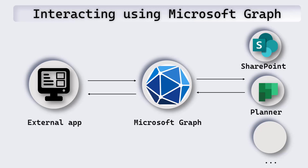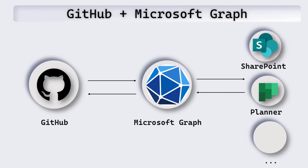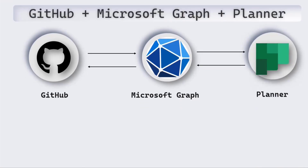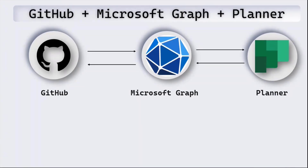There are several types of apps we can develop. One such app is GitHub. If GitHub has to access Microsoft 365 data, then we can use Microsoft Graph to get the data. That's what we'll be looking at today. In particular, we'll be looking at interacting with Planner from GitHub — using Microsoft Graph to interact with Planner and then passing that data back to GitHub.